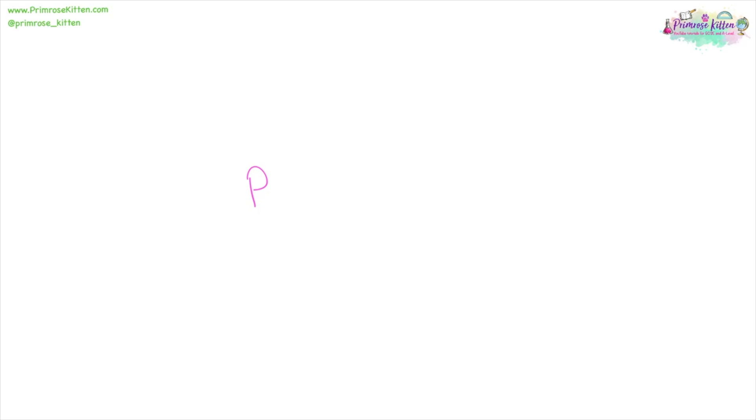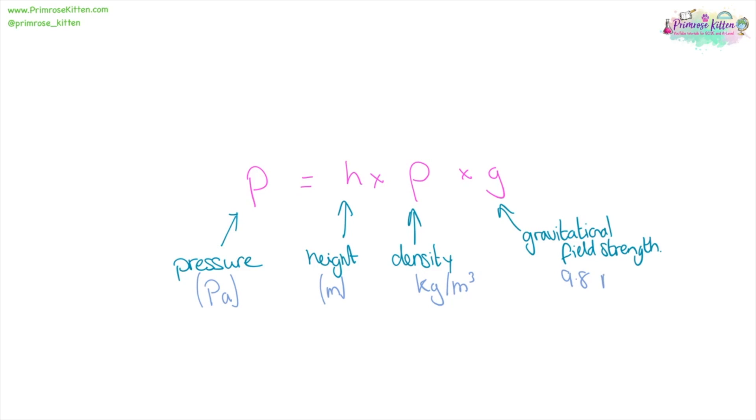Pressure with a P equals height times density, which is a lowercase rho, times gravitational field strength. Pressure is measured in pascals, height is measured in meters, density is measured in kilograms per meters cubed, and gravitational field strength is 9.8 newtons per kilogram.